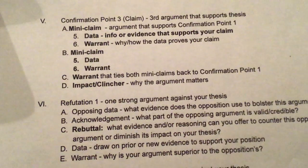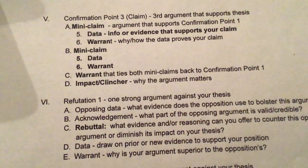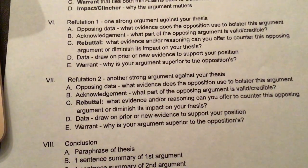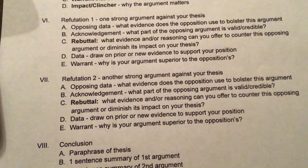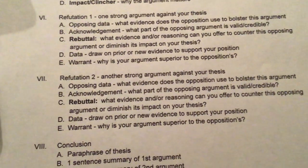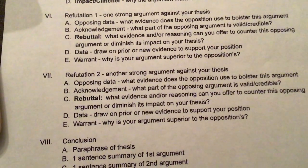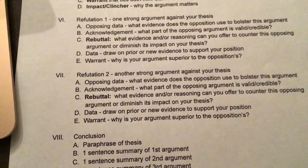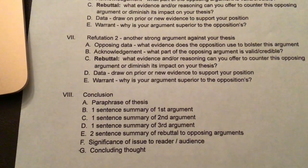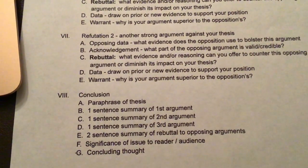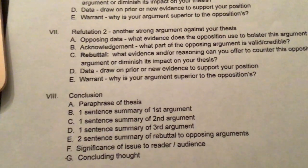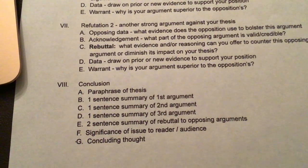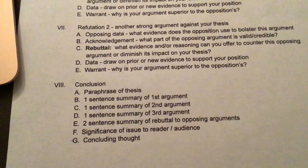That brings us up to Roman numeral five of the outline — you're going to have three confirmation points. Then Roman numerals six and seven are your refutation point, where you present one strong argument against your thesis and use a formula to state and respond to it. We'll talk more about that next week — I would not encourage you to work on your refutation this weekend. What I'd love for you to be doing this weekend is outlining history and confirmation points. The last thing is the conclusion, and I'll tell you right now you're not going to outline that — it's just a placeholder.